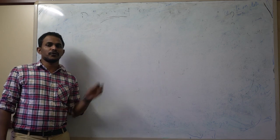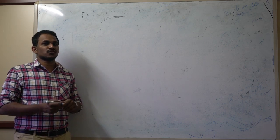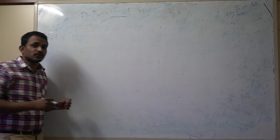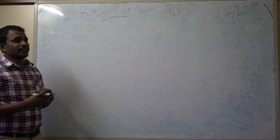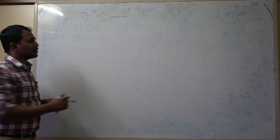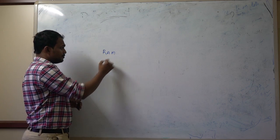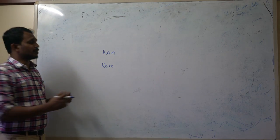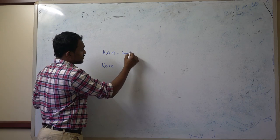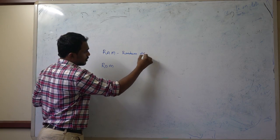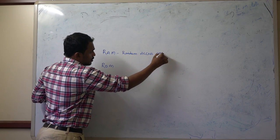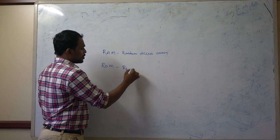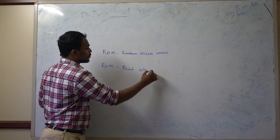Today we are going to talk about memory organization of a microcontroller, specifically the 8051 microcontroller family, which provides two on-chip memories: RAM, which stands for Random Access Memory, and ROM, which stands for Read Only Memory. These are the two different memories available with your microcontroller.